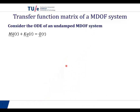As we did for the single degree of freedom case, we start with the ordinary differential equations of an undamped multi-degree of freedom system. Now we have a system of equations. Capital M is the mass matrix of this system. Q double dot is the column of generalized accelerations. Capital K is the stiffness matrix of this system. Q is the column of generalized coordinates. And capital Q is the column of generalized forces.